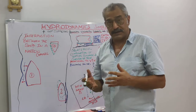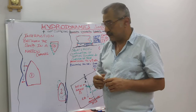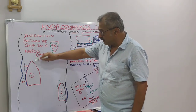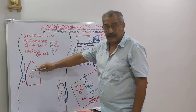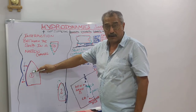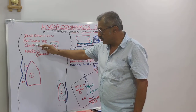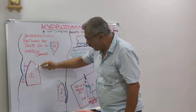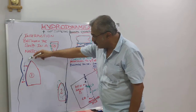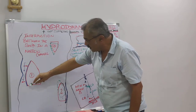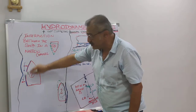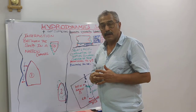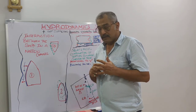Speed is another important factor. Taking into consideration that she doesn't have any UKC problem, if the speed is higher, the water filling-up rate will be higher, and there will be a big vacuum created throughout the area of her transit.